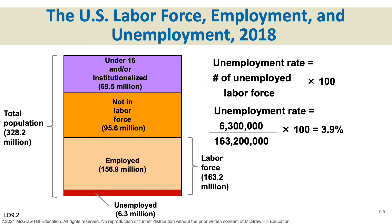Out of a total population of 328.2 million as of 2018, some people — 69.5 million — are children or institutionalized and not available for work. Another 95.6 million are available but choose not to work: retired people, the independently wealthy, full-time caregivers, or full-time students. These people are not in the labor force.